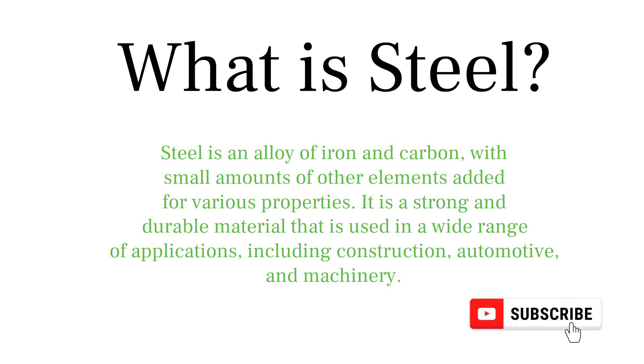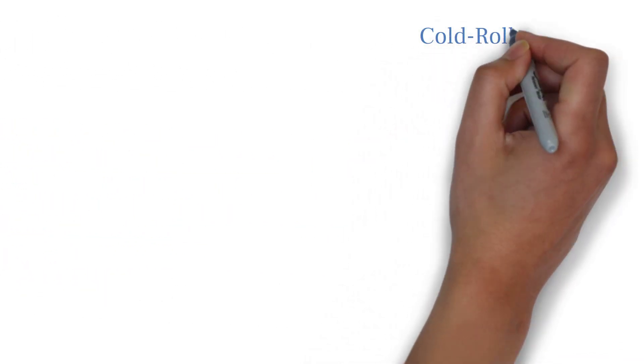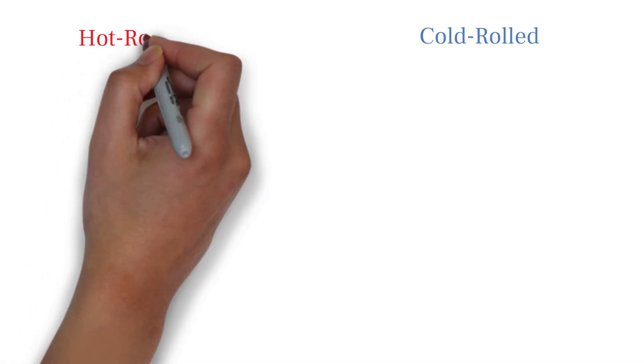Let's talk about the two main types of steel that we'll be discussing today: cold rolled steel and hot rolled steel.